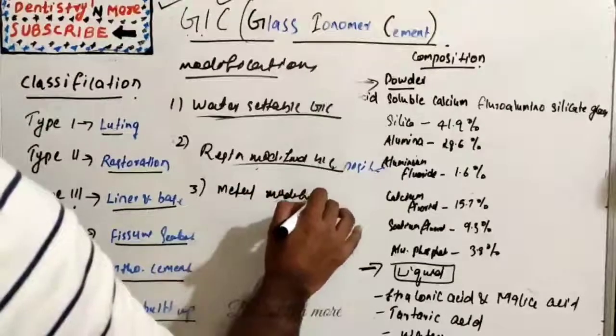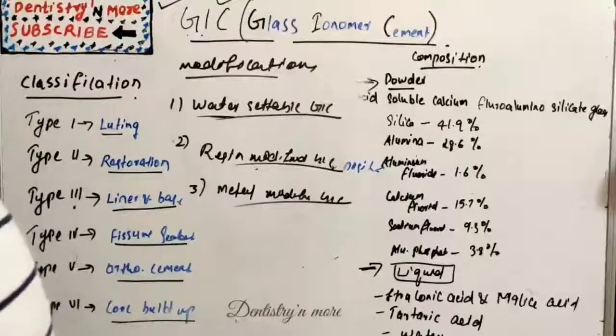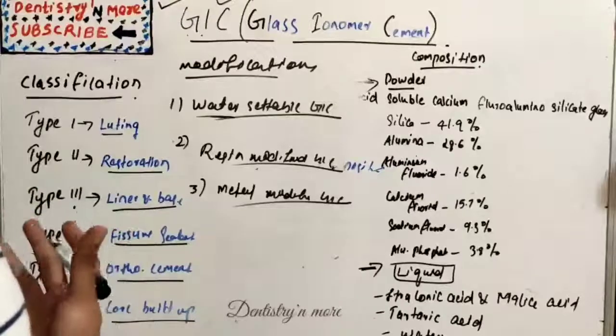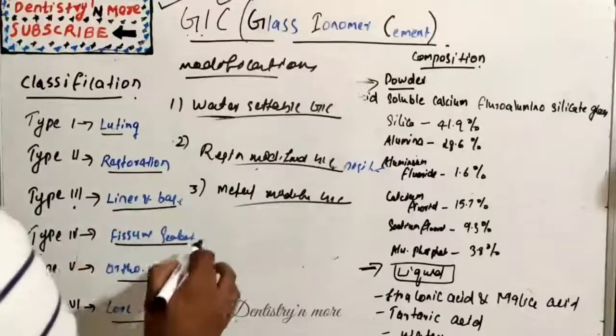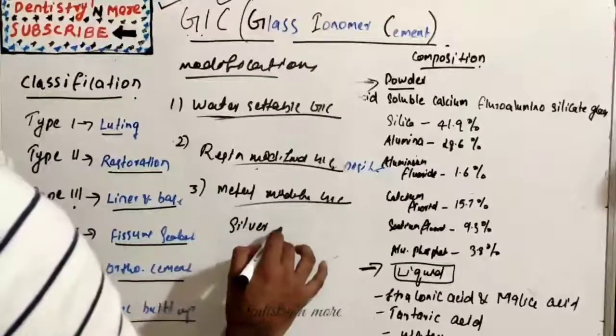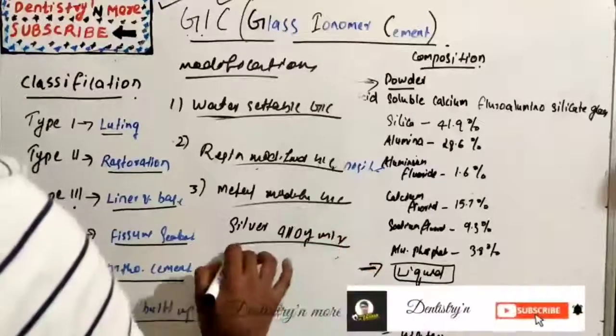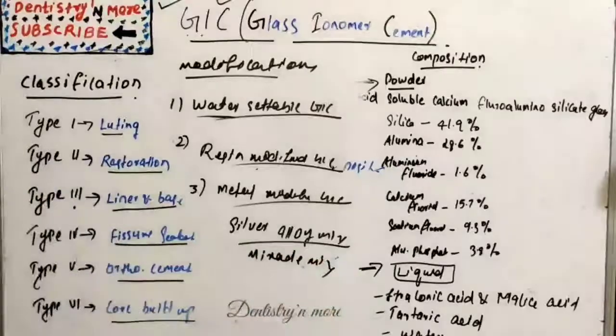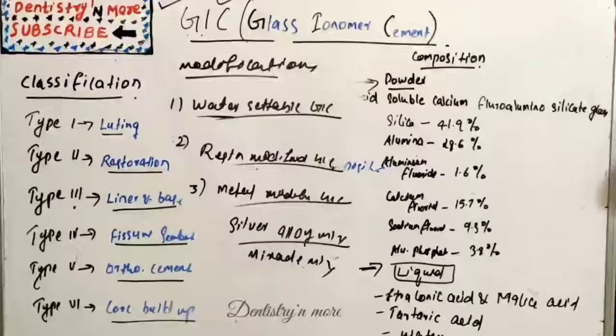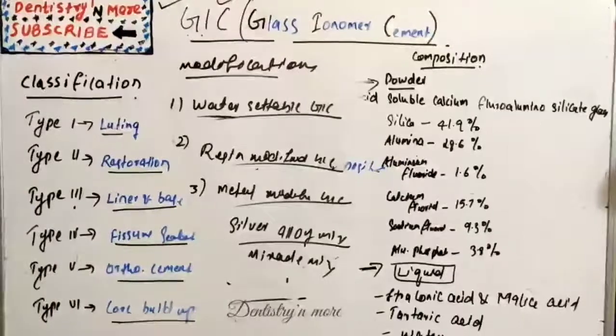Similarly, metal-modified GIC: Glass Ionomer has been modified by addition of filler particles to improve strength, fracture toughness, and resistance to wear. It has got silver alloy mix which is known as miracle mix.